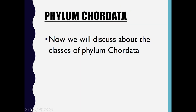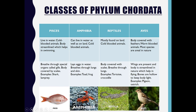Coming to Phylum Chordata: we will discuss some classes of Phylum Chordata. The classes of Phylum Chordata are Pisces, Amphibia, Reptilia, Aves, and Mammalia.